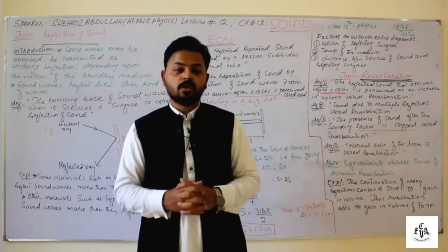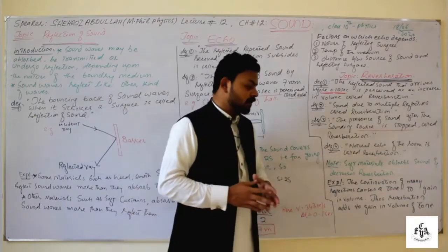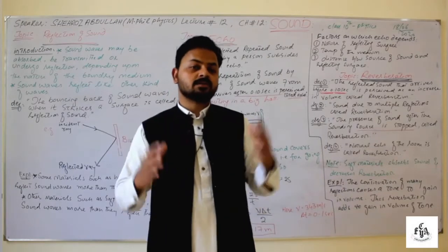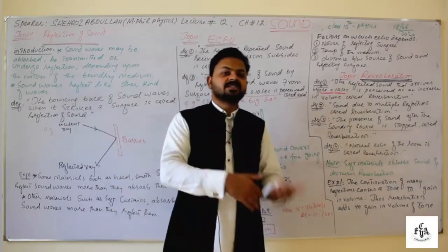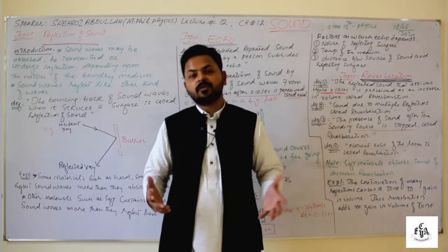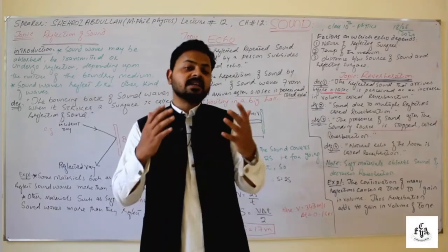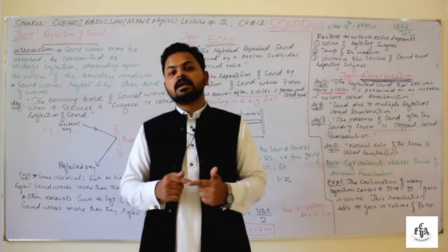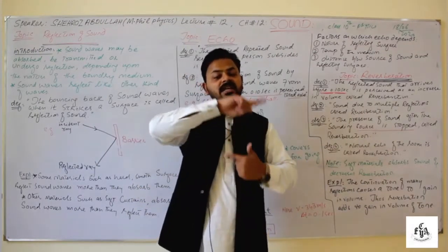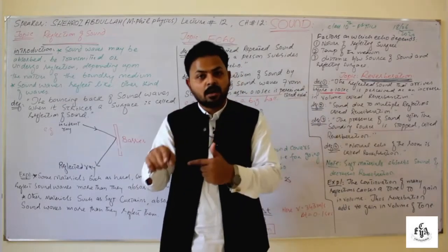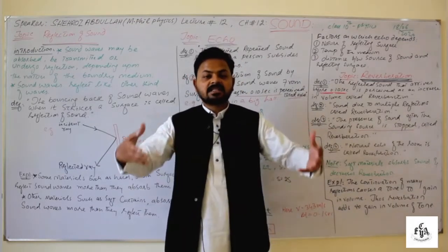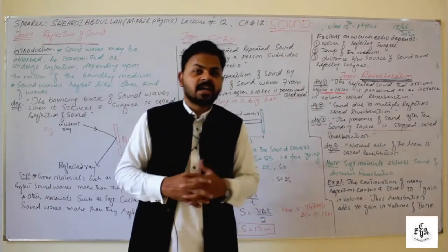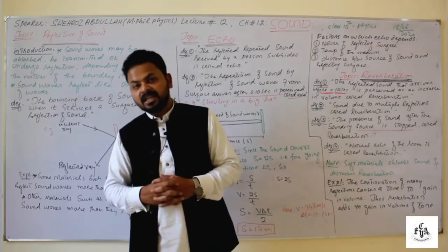By placing soft things like curtains, bed sheets, beds, sofas, etc., reverberation inside the room can be decreased. Since reverberation is multi-time reflection of sound, the volume of the tune increases — it gains some energy. This was all about reflection of sound, echo, and reverberation.